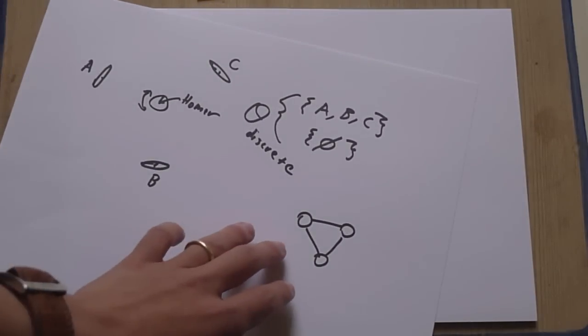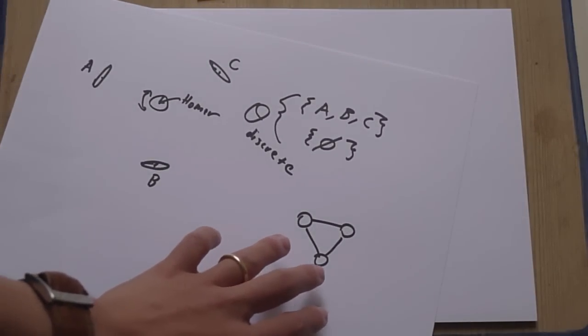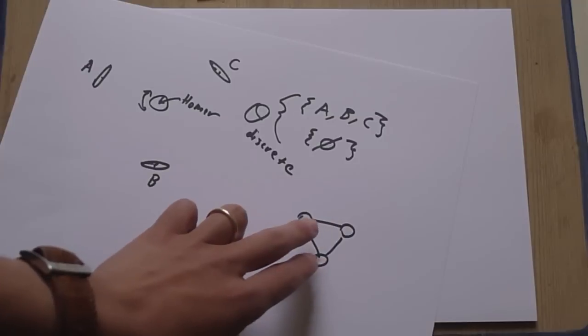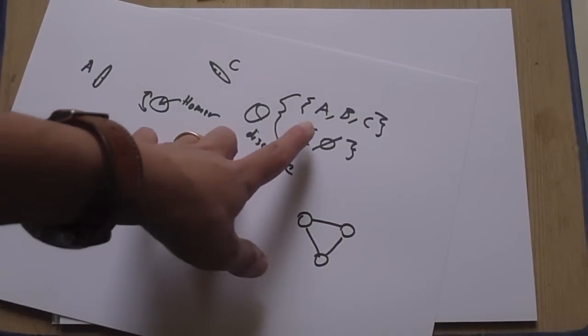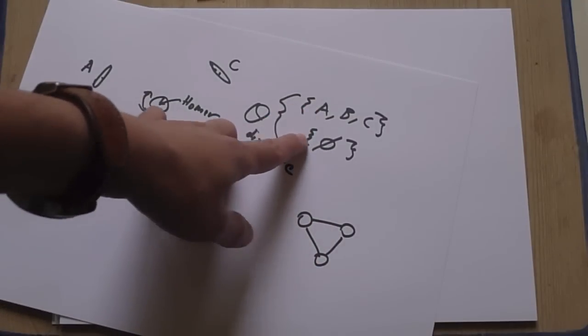But if you confuse Homer by putting him on a turnstile and getting him drunk, everything seems to be hard to isolate from each other, and you get this topological space here, which is three points connected. And the set of open sets is given by these two sets.